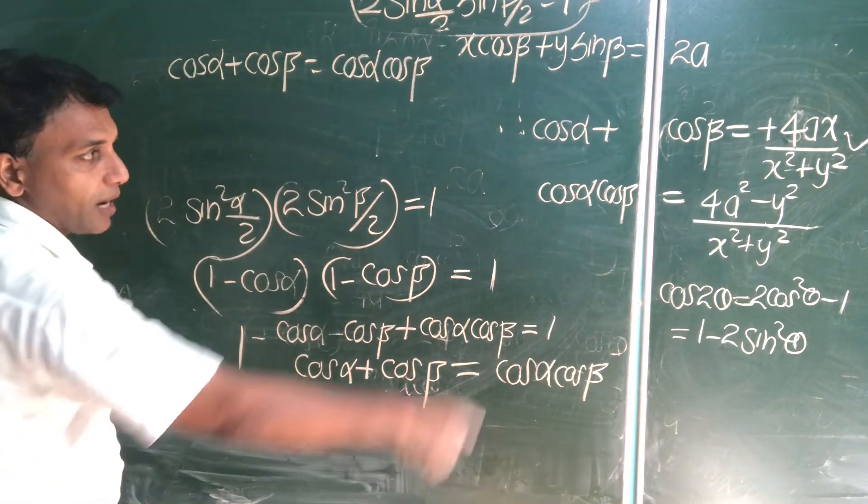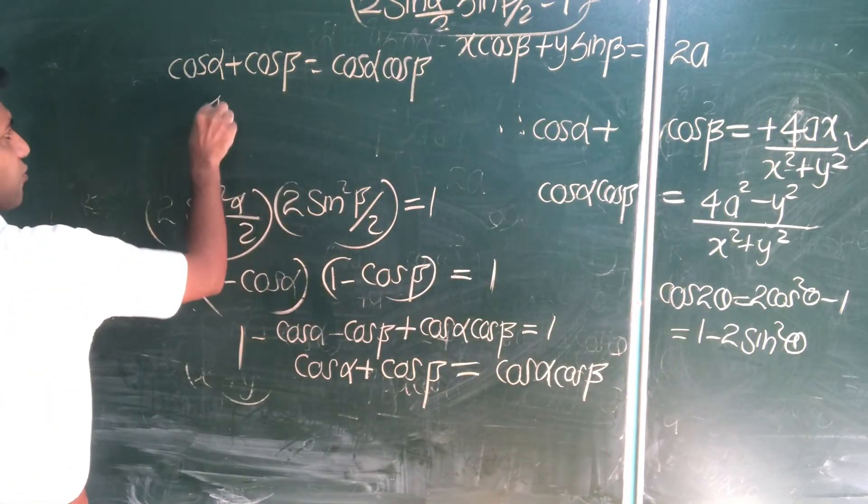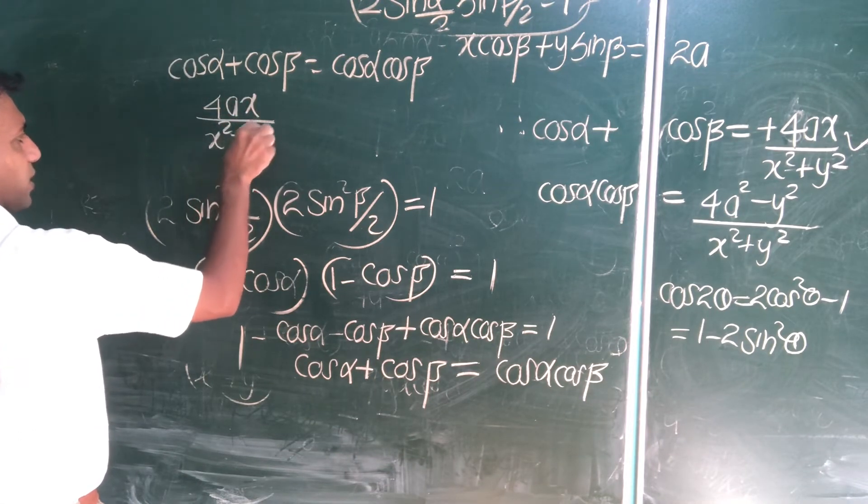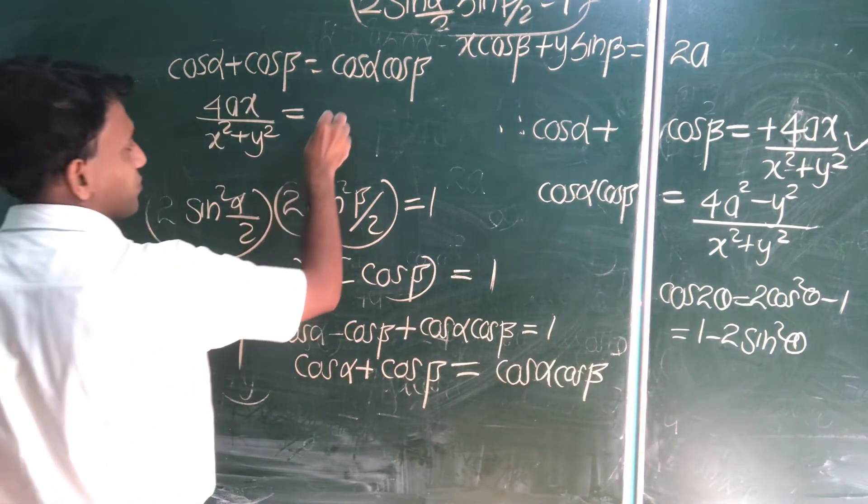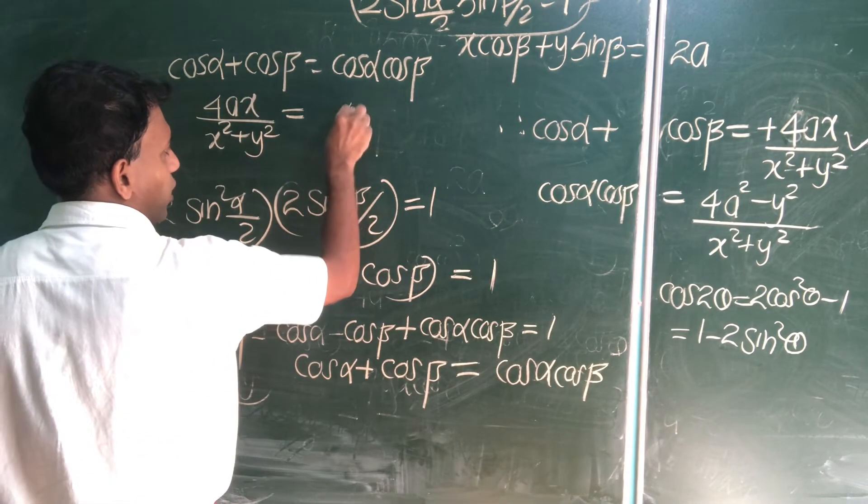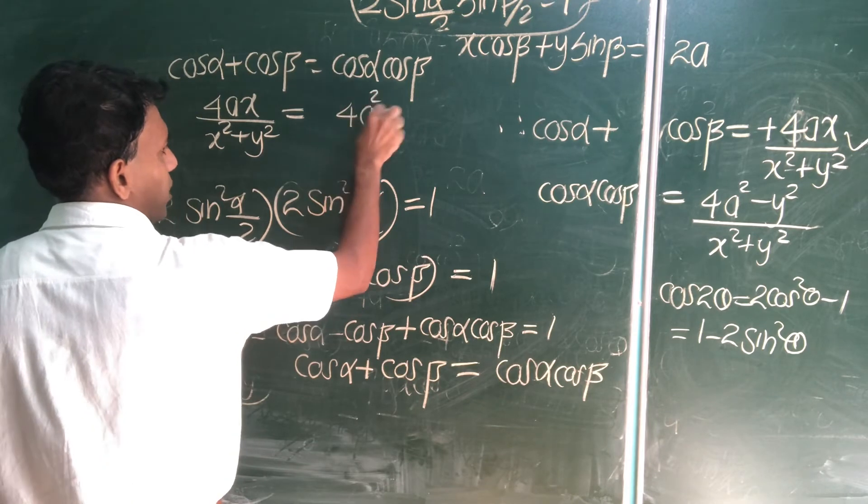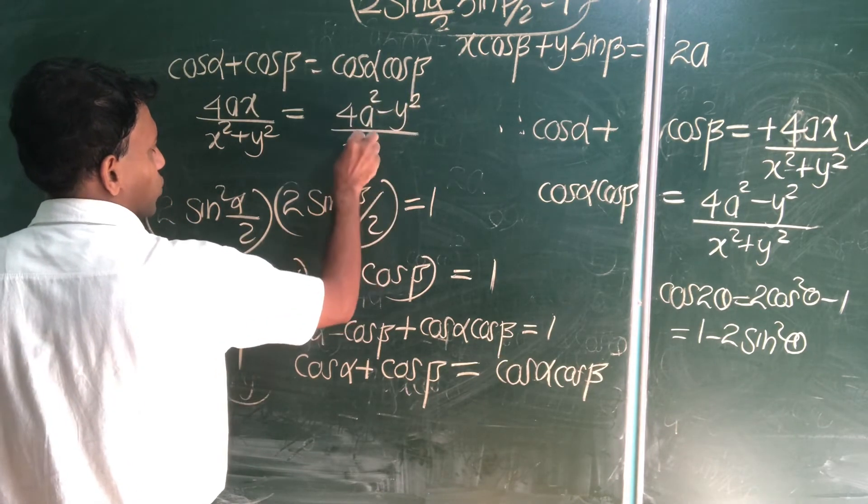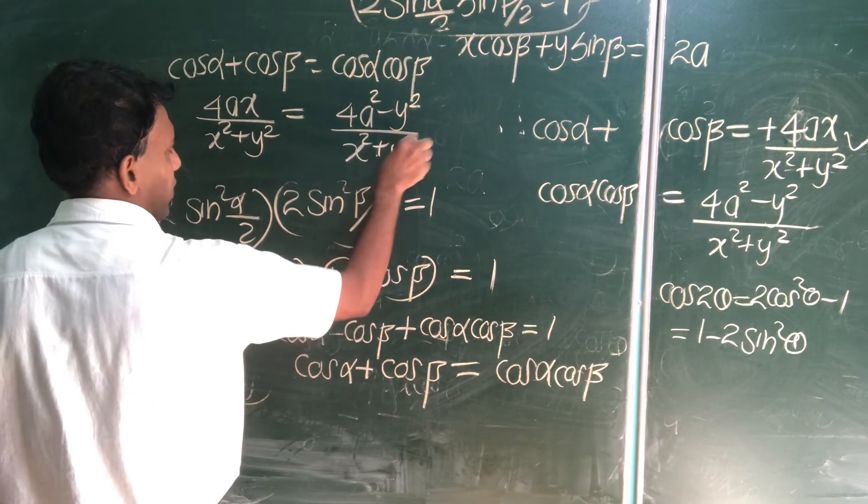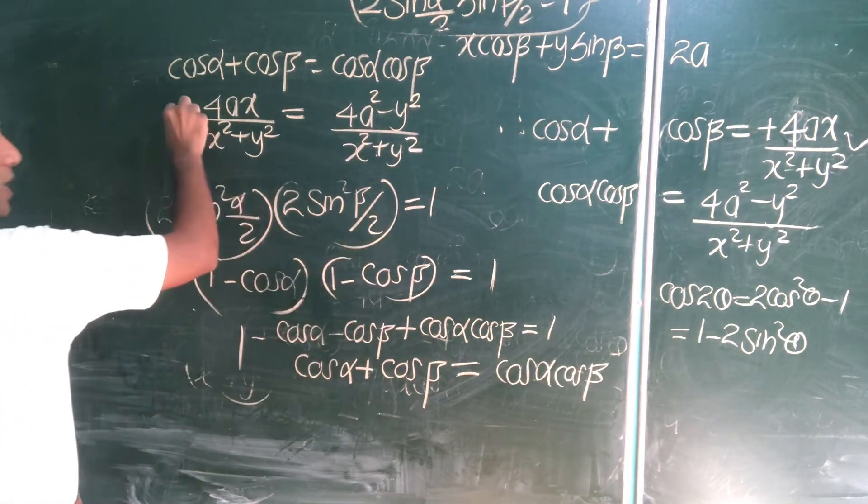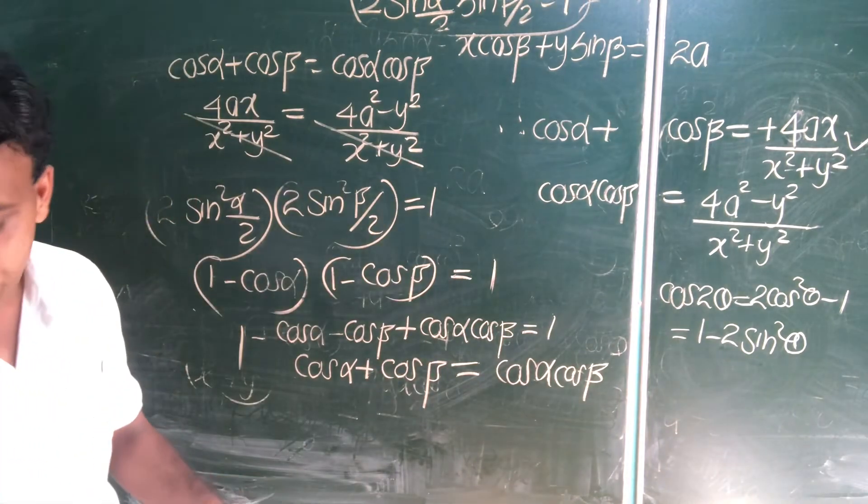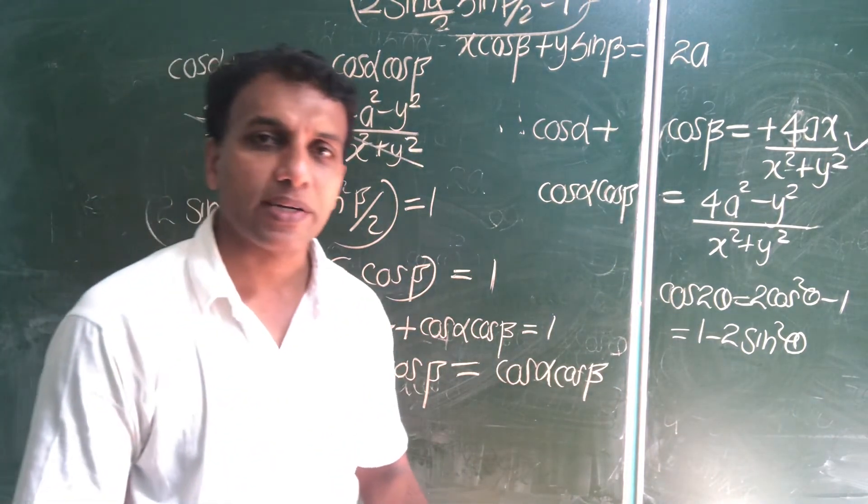Cos alpha plus cos beta equal cos alpha into cos beta. Now, substitute what is sum of the roots? 4AX over X square plus Y square equal. What is product of the root? 4A square minus Y square over X square plus Y square. Now, see both sides, X square plus Y square cancel, rearrange. You have the first part answer.